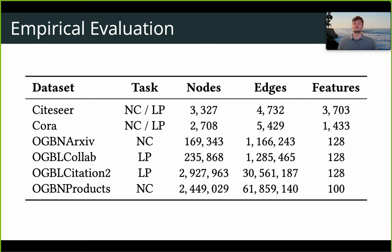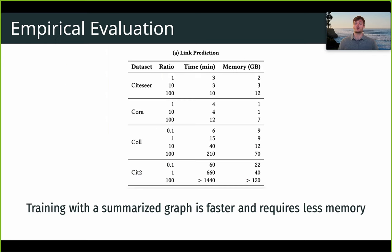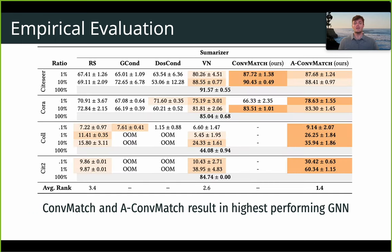We evaluate our method over six datasets with varying tasks and size, and our experiments show that ConfMatch and A-ConfMatch are fast — over four times faster than the next best baseline in some datasets. We also show that there's a significant runtime and memory benefit from training with a summarized graph, and these benefits only come at a low cost with ConfMatch. In fact, ConfMatch achieves up to 95 percent of the prediction performance of GNNs on node classification and link prediction, while trained on graphs summarized down to just one percent the size of the original graph.